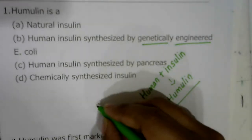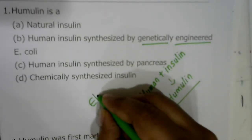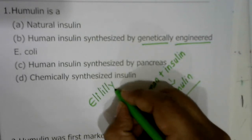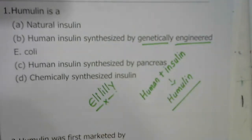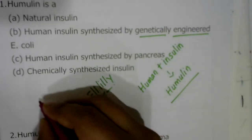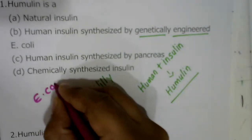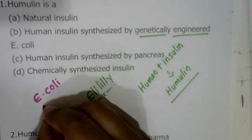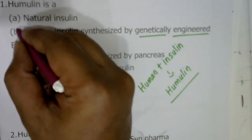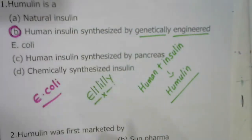Humulin is artificial insulin prepared by the help of genetic engineering. There is a company called Eli Lilly — an American company — that synthesized insulin for the first time using E. coli bacteria. So the correct answer for question one is the second option.